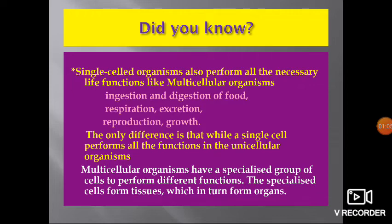The difference is that while a single cell performs all the functions in unicellular organisms, multicellular organisms have a specialized group of cells to perform different functions. These specialized cells form tissues, which in turn form organs.